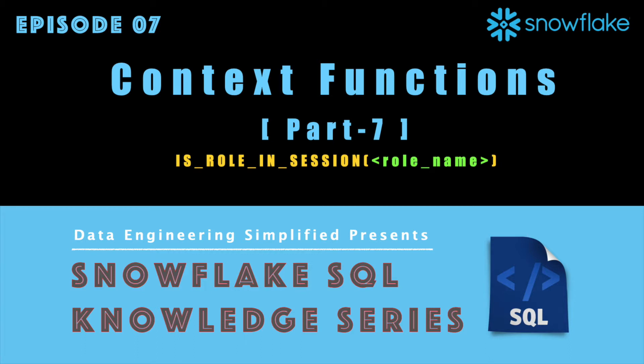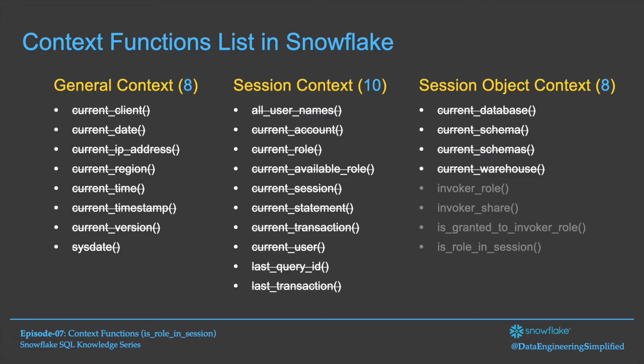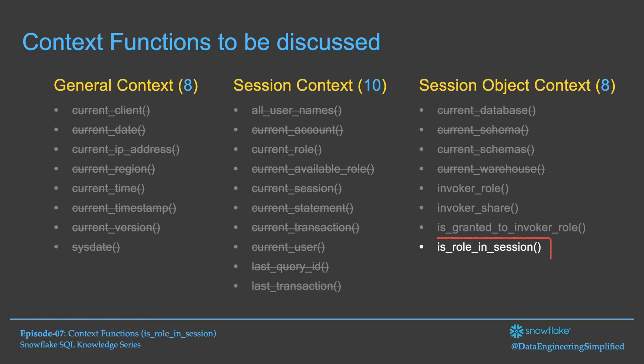Let's start. At the time of recording, Snowflake has the following context functions, and it may grow in future: 8 general context functions, 10 session context functions, and 8 session object context functions. The category classifications were discussed in detail in episode 1 of this series. The context functions already discussed in previous episodes are struck out — refer the playlist link. In this episode 7, we will talk about isRoleInSession, which falls under session object context functions. This function has a very important role when we talk about column-level security and data masking.